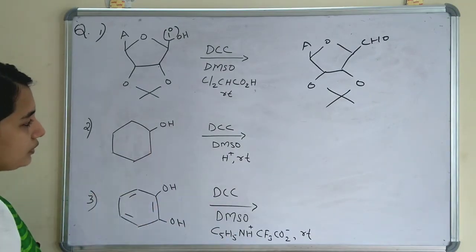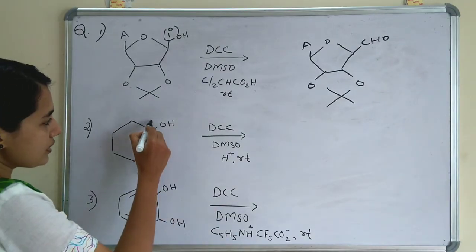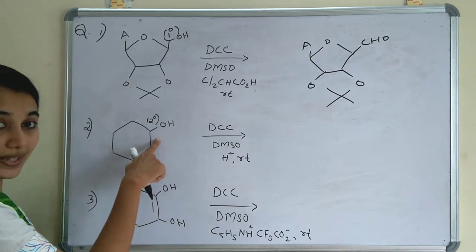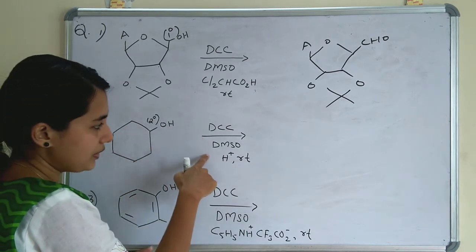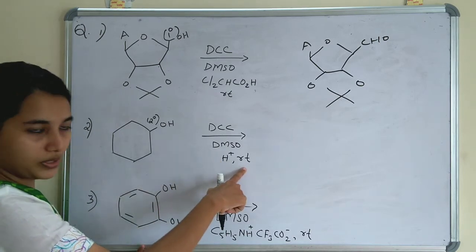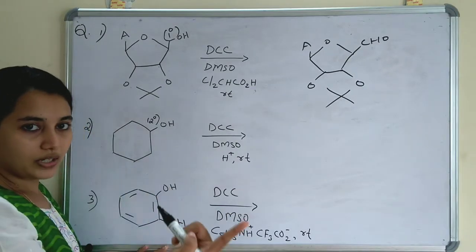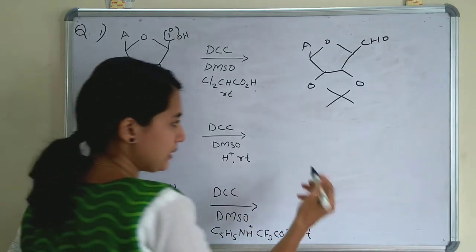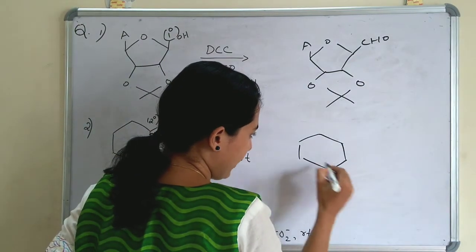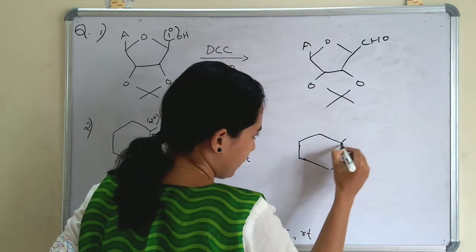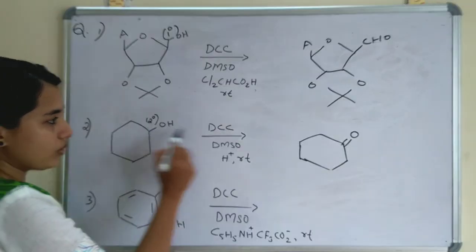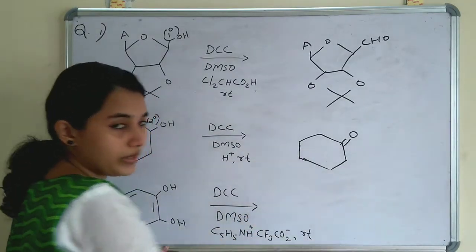In the second question, the OH is a secondary OH. The reagents are DCC, DMSO, and acid at room temperature. Secondary OH will be converted to a ketone. The product will be cyclohexanone — the secondary OH is converted to a ketone (C=O).